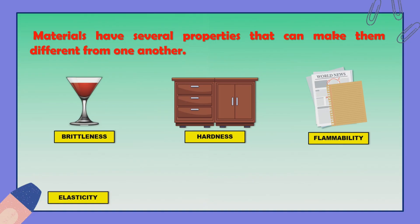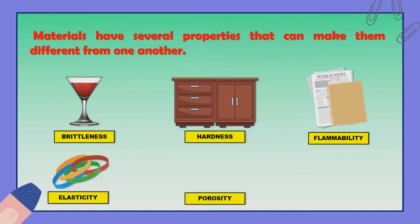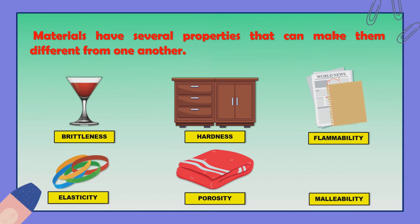Fourth, we have Elasticity — it is the ability of a material to be stretched and returned to its original shape without breaking. A rubber band is an example of an elastic material. Next, we have Porosity — it is the ability of a material that allows water and gases to pass through it. A towel is an example of a porous material. And last, we have Malleability — it is the property of a material to be hammered into thin sheets until the desired shape is attained. A necklace made of gold is an example of a malleable material.